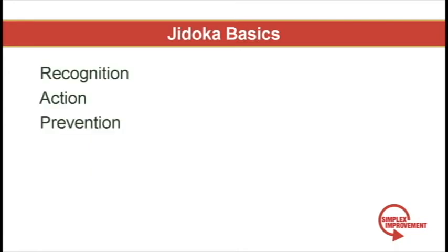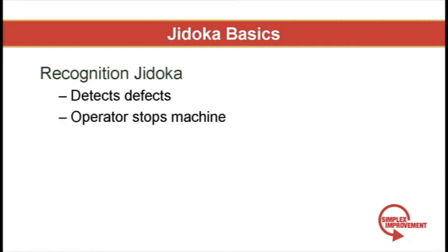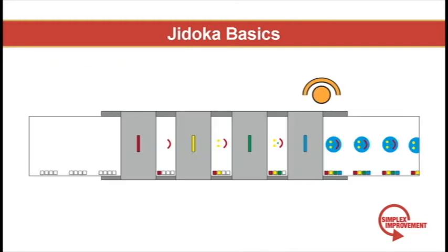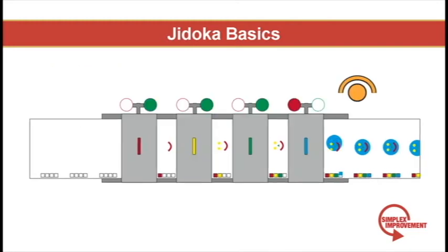There are three levels to Jidoka: recognition, action, and prevention. The first step to intelligent automation is to build a mechanism into the machine that detects defects. Depending on what you are manufacturing, this can be as sophisticated as a computer vision system or a simple latch that is tripped when a part is larger than spec. At this stage of Jidoka, the machine detects an error and performs an action to let the operator know a defect has occurred. A flashing light or an alarm lets the operator know the machine needs to be shut off before more defects are generated. At this basic stage of Jidoka, an operator is still coupled with the machine.